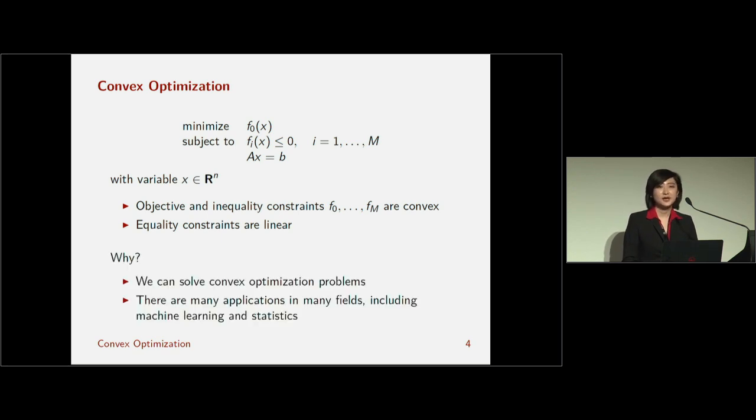We're interested in problems of this form for two reasons. First, we can solve them. Convex analysis is a very well-known field. There's many algorithms and solvers out there that will get you a solution to this type of problem quickly and efficiently. Secondly, convex optimization problems arise in many different applications in many different fields, including machine learning and statistics.